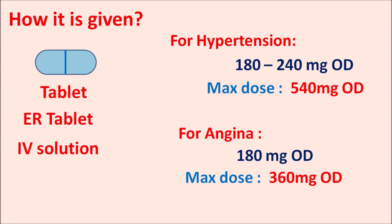In summary, Diltiazem is a calcium channel blocker belonging to the benzothiazepine chemical category. It is selective for both cardiac and vascular smooth muscle — reducing cardiac oxygen consumption and producing vasodilation to decrease blood pressure. It is used in chronic stable angina and hypertension. Key precautions are bradycardia, risk of heart failure, increased risk of heart block, and liver injury with long-term use. It should be carefully combined with other drugs that suppress cardiac activity.